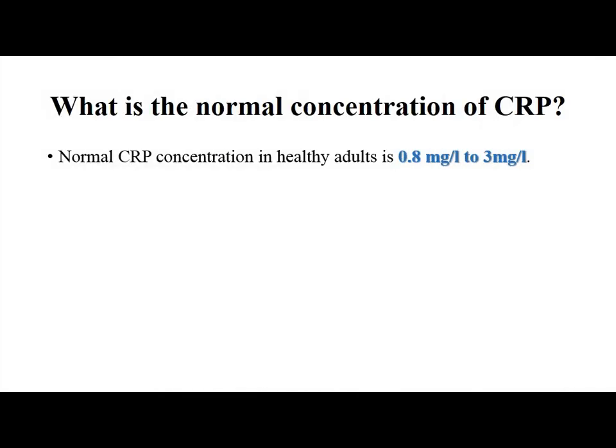The normal value of CRP in healthy individuals is a concentration of 0.823 mg per litre. The values will not differ between genders, but due to age, elderly individuals may have higher values compared to adults. In some normal physiological conditions like pregnancy, CRP values may increase.